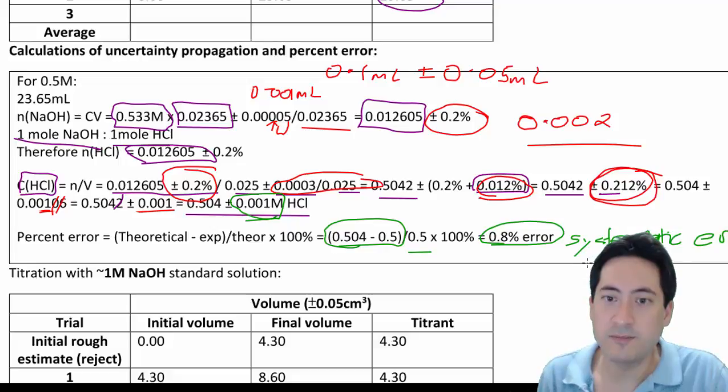That's an idea of our accuracy. This one here is to do with our random error. And that gives us an idea of our precision.